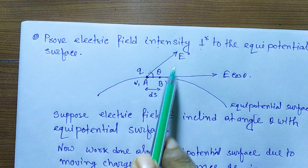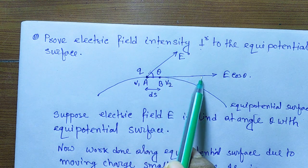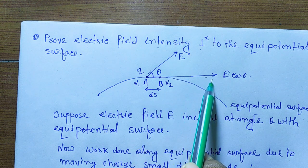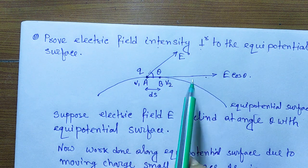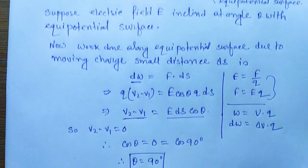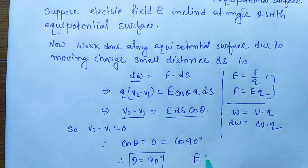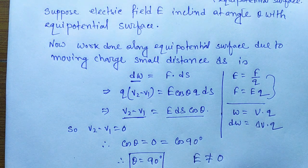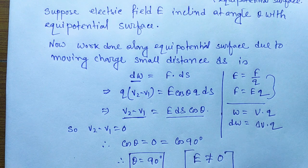So it is proved that the angle between the electric field and the equipotential surface is 90 degrees, or they are perpendicular to each other, where E not equals zero and ds not equals zero. Thank you.